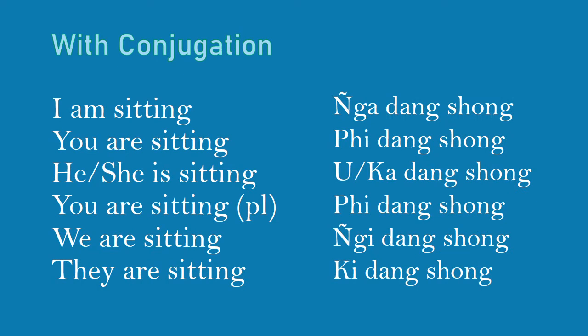Example with 'sit' (SHONG): I am sitting — Nga DANG SHONG. You are sitting — Pi DANG SHONG. He or she is sitting — Wu DANG SHONG or Ka DANG SHONG. We are sitting — Nghi DANG SHONG. They are sitting — Ki DANG SHONG.